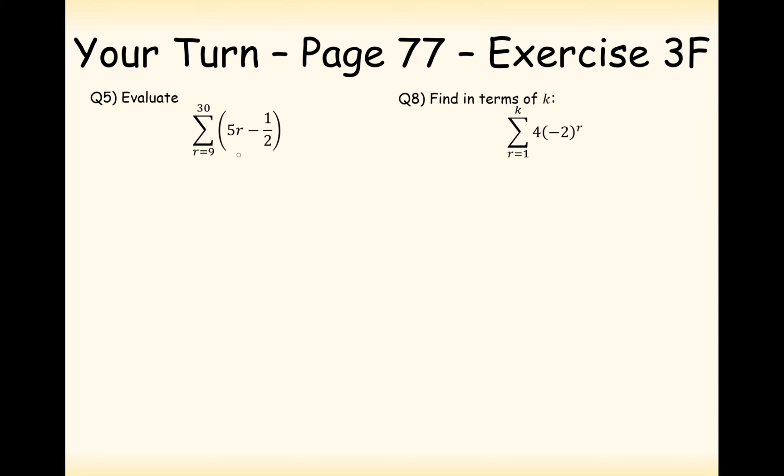OK then, so I'm going to show you a different way that you can do question five here. And I'm just going to substitute in nine first and call that my first term. Substitute in 30 and call that my last term. So in this case here, I'm going to substitute in nine first. So I'm going to get 45 minus a half. So that would be 44.5 as my first term in my arithmetic progression series here. Substituting in 10 I'm going to get 49.5. Next term is going to be 54.5. And this is going to go all the way up to 30. In which case it's going to be 5 times 30 minus 0.5, which is giving us 149.5. So I know that my last term here is 149.5.